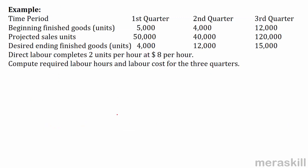Let's look at an example. We have beginning finished goods inventory, projected sales of 50,000, 40,000, and 120,000 for the first, second, and third quarters. Closing units are 4,000, 12,000, and 15,000. Direct labor completes two units per hour at the rate of $8 per hour.